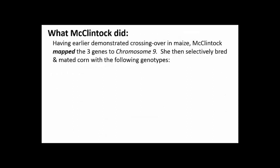McClintock mapped the three genes to maize chromosome 9. After she did that, she isolated a male maize plant that was homozygous for the dominant C' allele, the dominant BZ allele, and also had the DS allele. Then she used a female that was homozygous for the recessive C allele and the bz allele, and also lacked the DS allele. She mated these two plants.